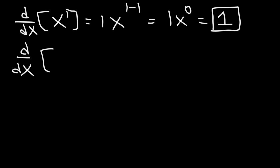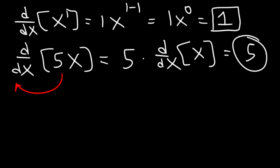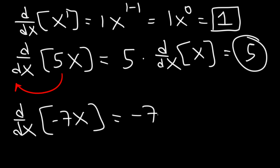Now what about the derivative of 5x? If you have a constant in front of the variable, you can move the constant to the front. So this is the same as 5 times the derivative of x. And the derivative of x is 1, so 5 times 1 will give us 5. The derivative of negative 7x is simply negative 7.